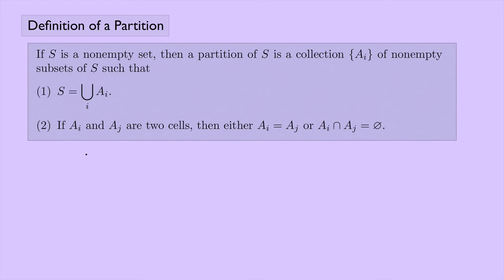And condition two, we have if AI and AJ are two cells, then either, well, they're the same cell, or they're completely disjoint. That means you take the intersection of them and you get the empty set. There's no overlap between them.